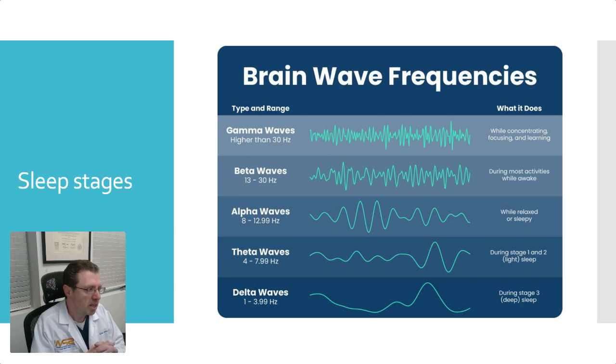Most people, while they're awake, are going to be either in the alpha or beta frequency range. Beta frequency range, a lot of times, can also cause a bit of anxiety, as can gamma waves.